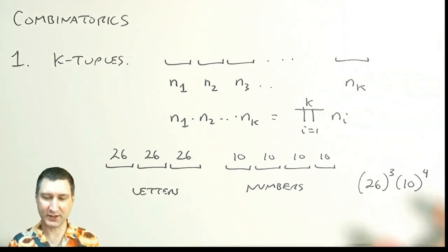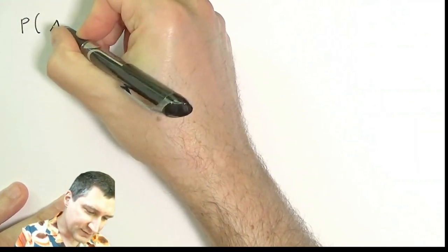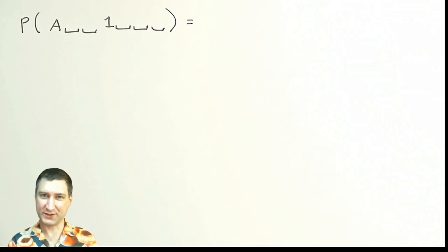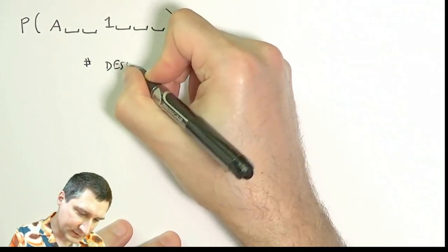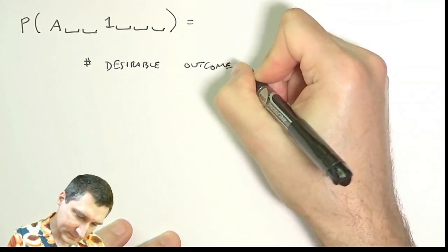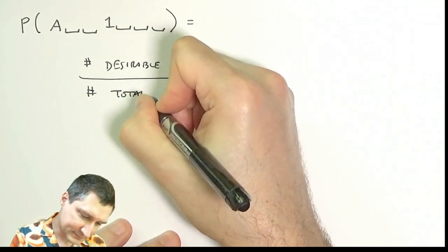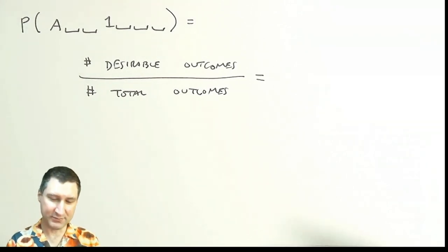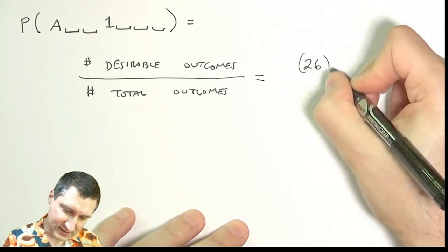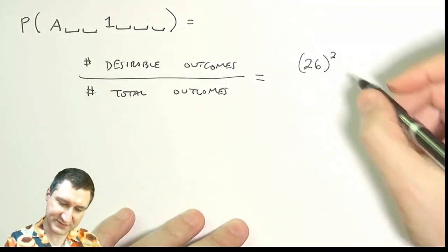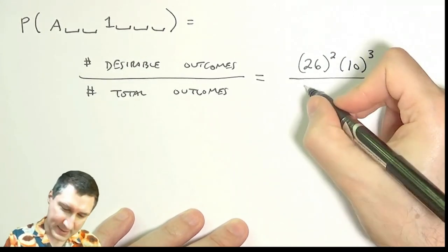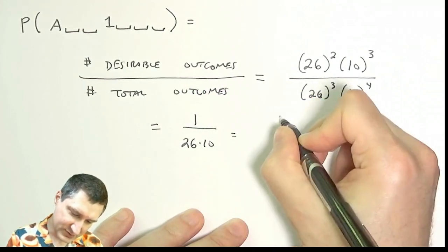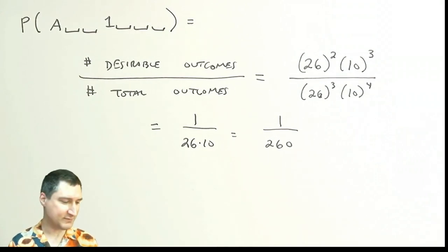We can turn this into a probability problem by asking: what's the probability that a license plate is of the form A-blank-blank-1-blank-blank-blank? We solve this with a counting method: the number of desirable outcomes divided by the total number of outcomes. The desirable outcomes fix A and 1, leaving 26 times 26 possibilities for the next two letters and 10 times 10 times 10 for the remaining numbers. Dividing gives 1 over 260.